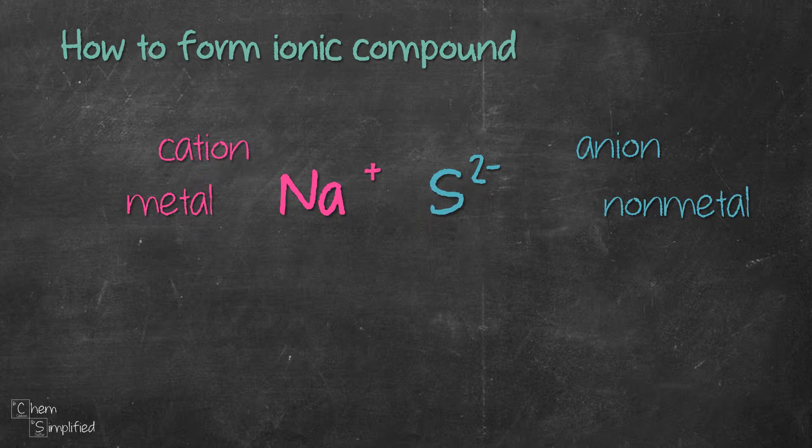In this example, we have Na+ as the cation and S2- as the anion. When there's no number in front of the charge like Na+, that actually means it's a 1+. The crossover method is very simple. You take the number in front of the charge and you cross it over to the other atom like this.